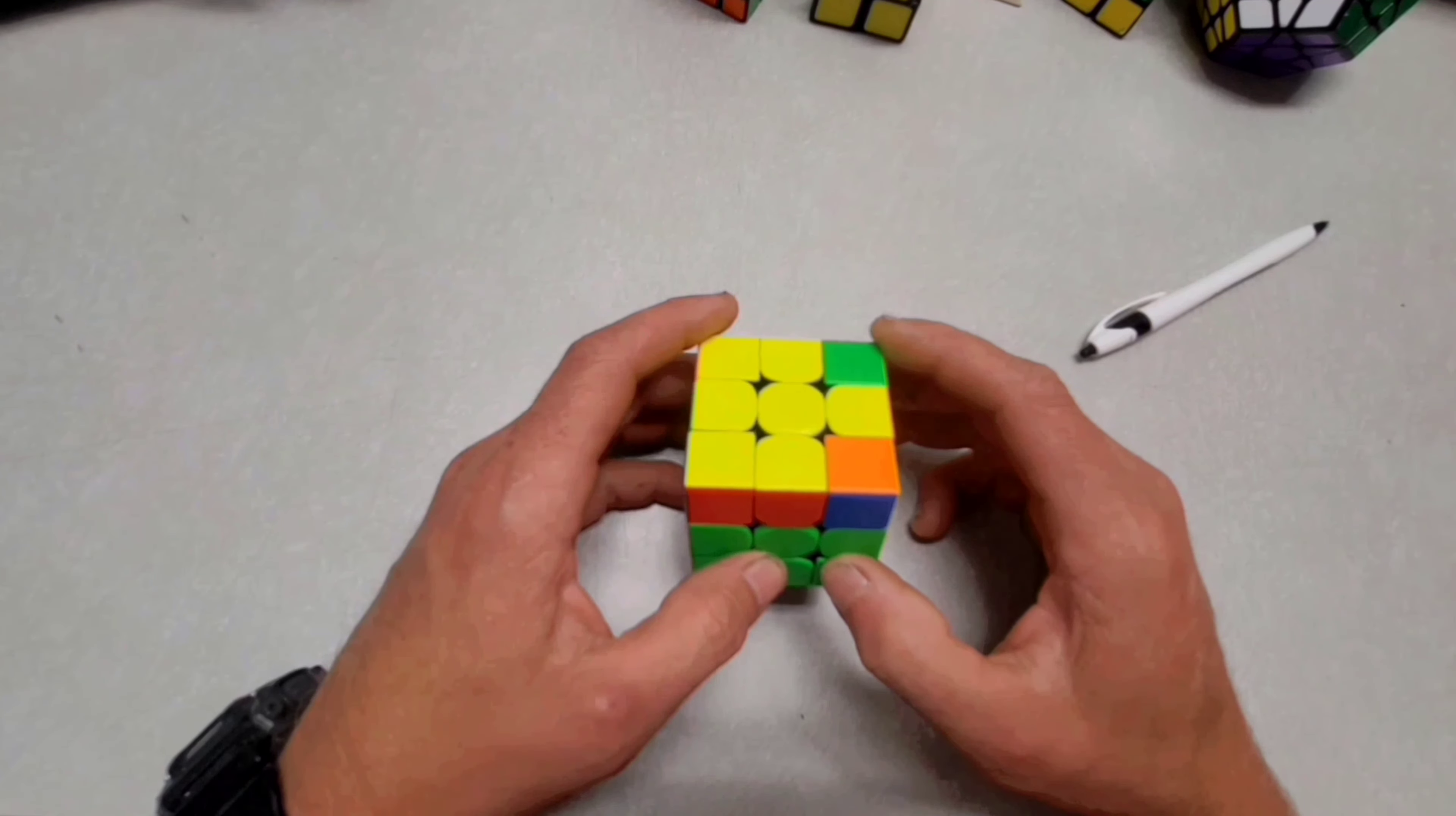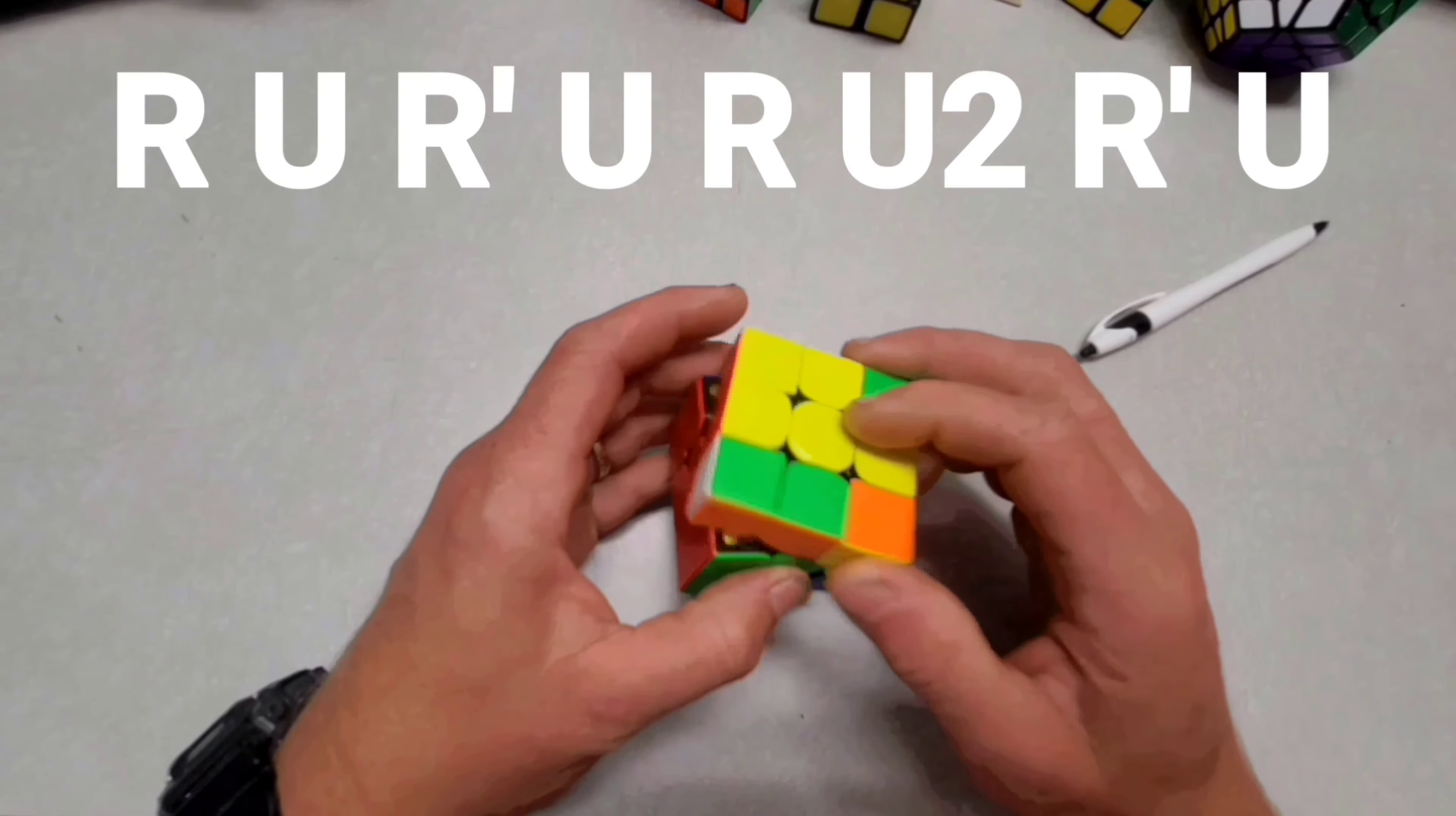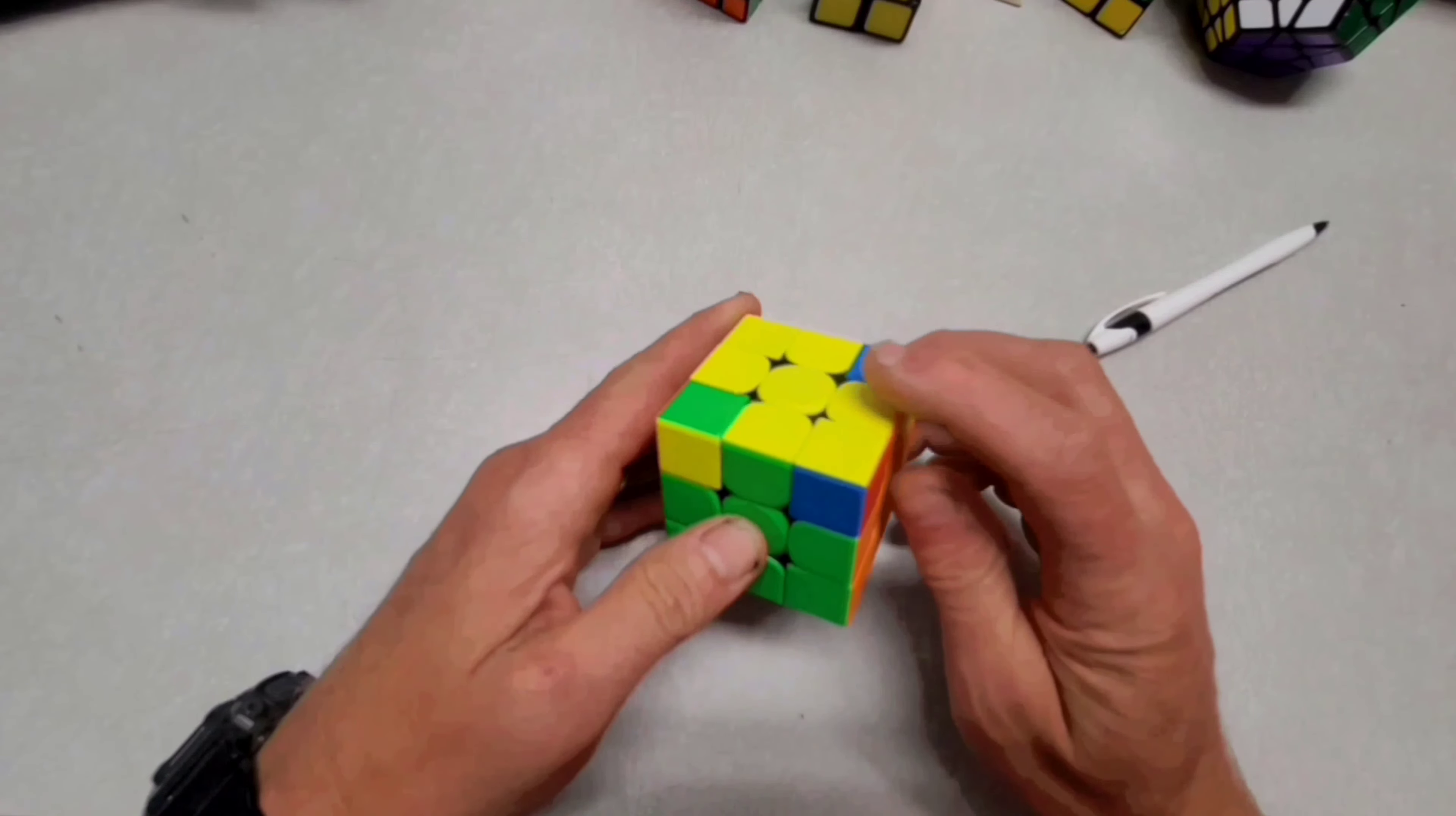And then when you do that, this algorithm, you will do. You would hold it here and you would do right U, right prime U, right, up twice, right prime, U. See how it's solved? That's good.